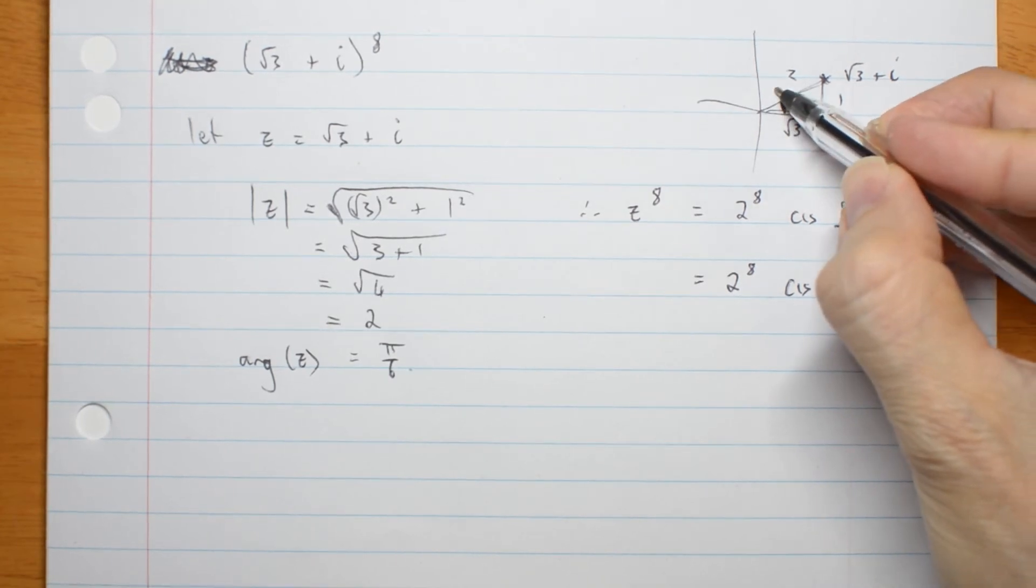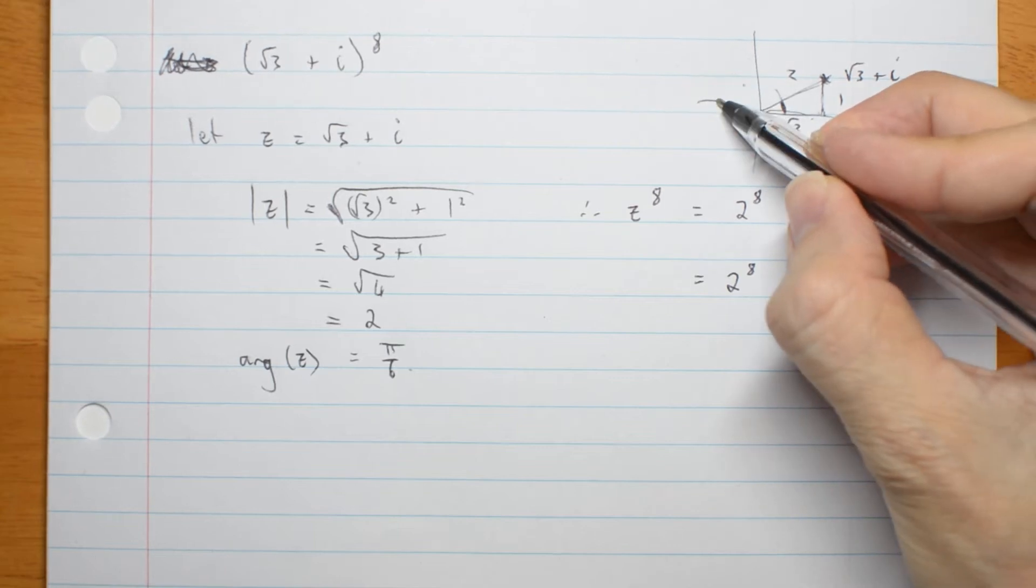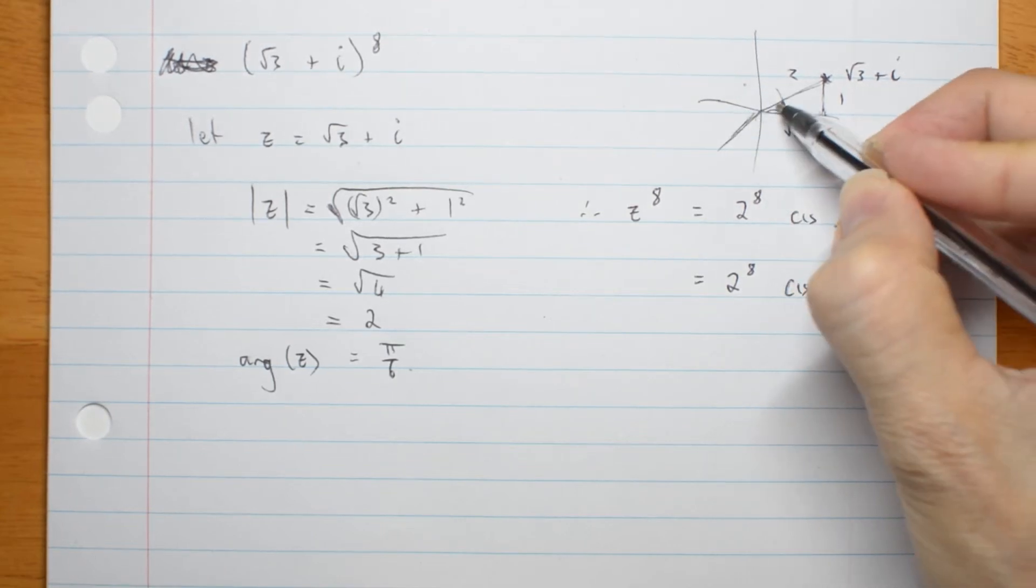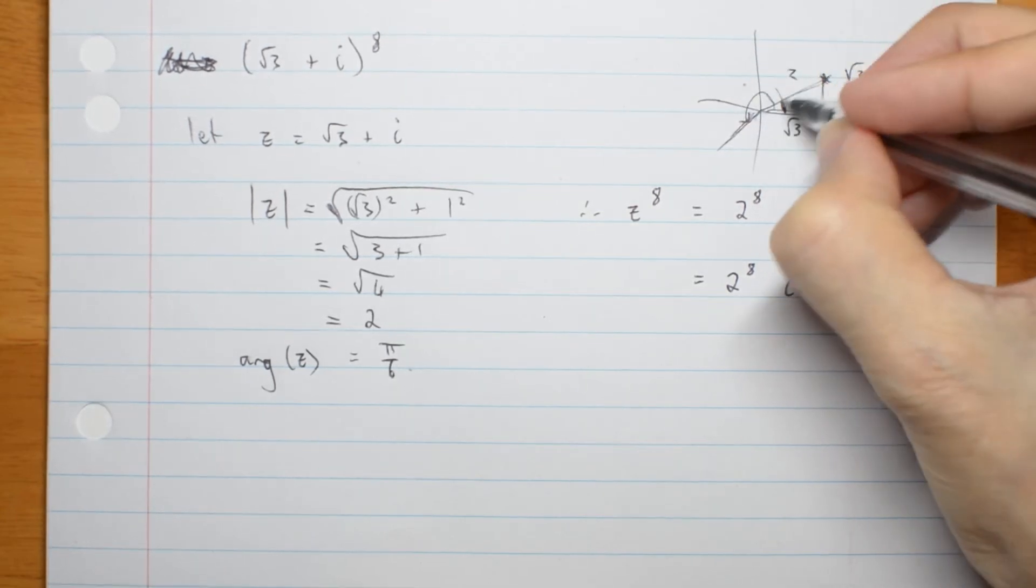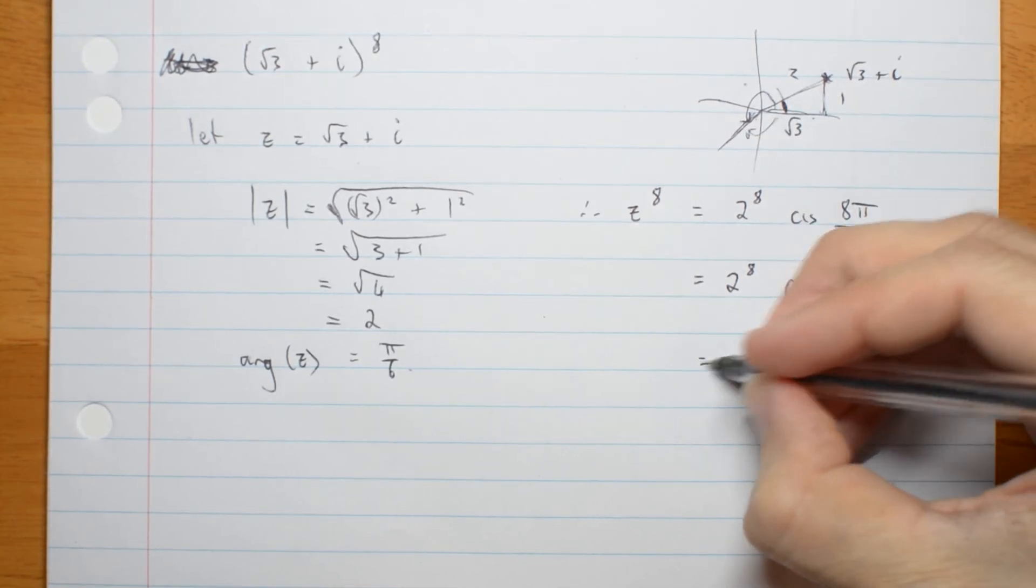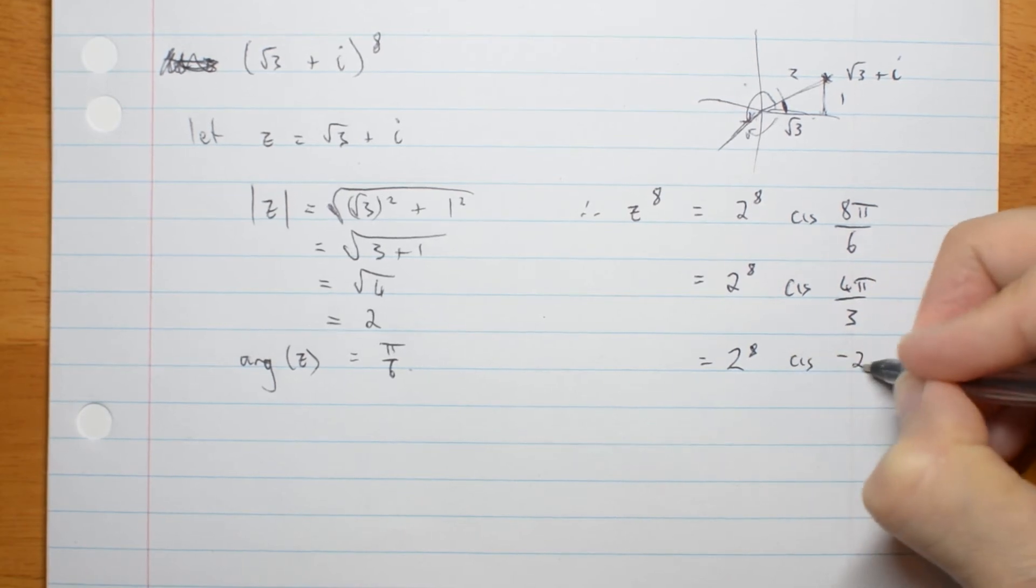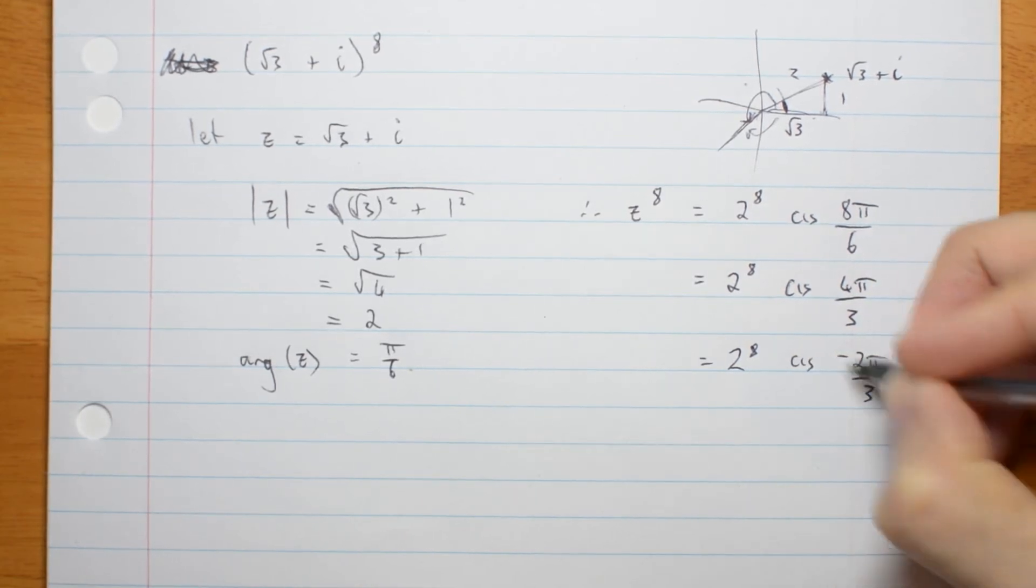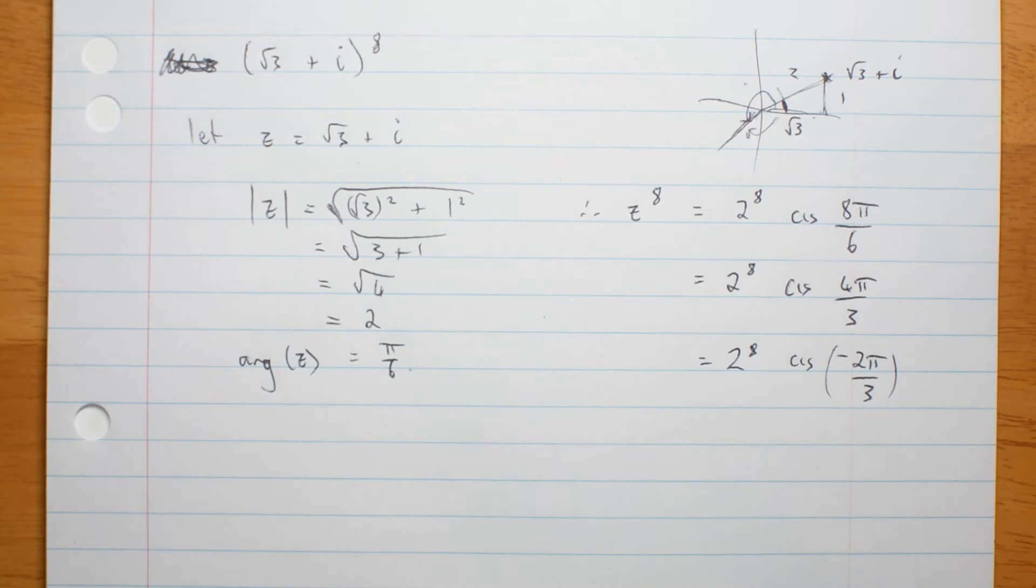So, pi on 3, 2 pi on 3, 3 pi on 3, 4 pi on 3 is down here. This angle is 4 pi on 3. So I actually want negative 2 pi on 3. OK.